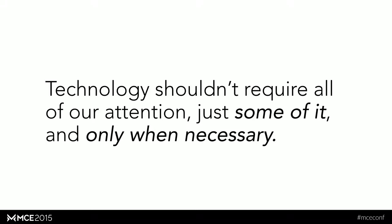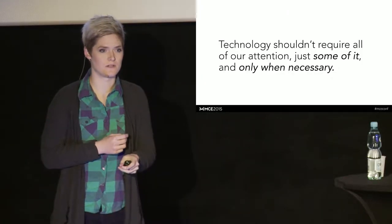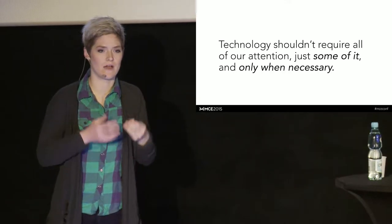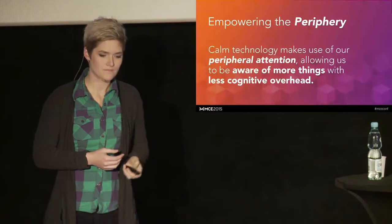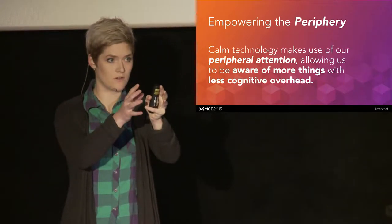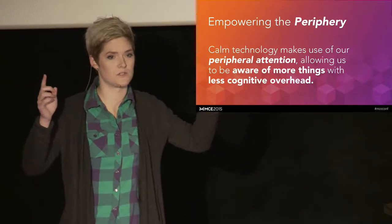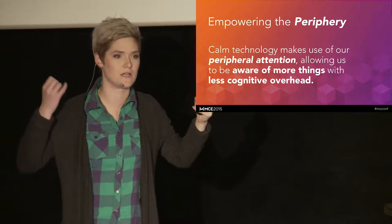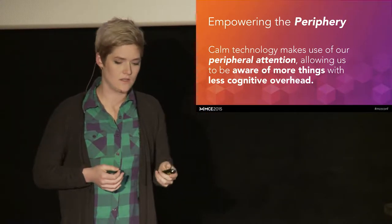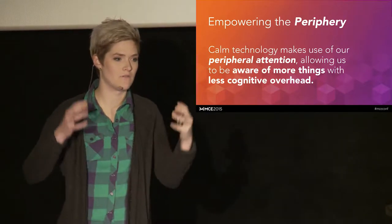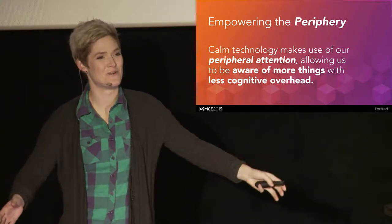So one of my favorite quotes from this paper is that technology shouldn't require all of our attention because then technology gets in the way. It should just require some of it and only when necessary. So the least amount of technology necessary to get the point across. And how to do this is looking at how you design an alert style. How you design how that technology gets your attention. And one of the ways to do this is to empower peripheral vision. As humans, we have a lot of high resolution vision right here in our area of focus. But as you go back further and further, you get low resolution attention in the periphery. But you can compress a lot of information into the periphery by using different alert styles, like haptics, and audio alerts, and buzzes, and things like that. So you can basically be aware of way more things without having to shift your focus to that high resolution attention.